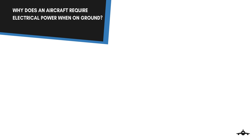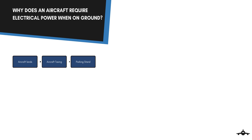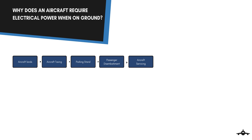So why does an aircraft require electrical power when on ground? When an aircraft lands it uses the taxiway to reach an aircraft bay for parking. After that a passenger boarding bridge is engaged for disembarkation of the passengers. Later the aircraft crew starts servicing the aircraft, which includes a lot of different activities that require power. Flight technicians need to check the aircraft electronics to make sure everything is working fine. Aircraft are also vacuum cleaned and so on.